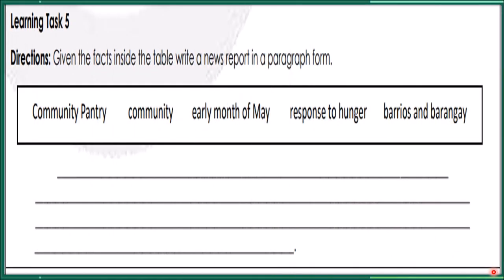For learning task 5, given the facts inside the table, write a news report in paragraph form. The facts are already provided. Write a news report using those facts. Remember, children, the WH questions — five W's and one H question: who, what, where, when, why, or how it happened.